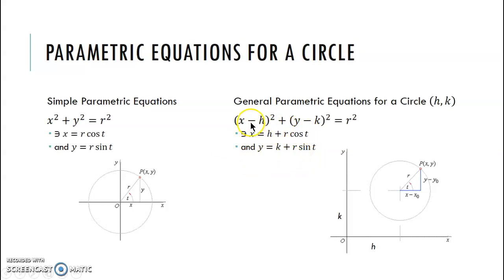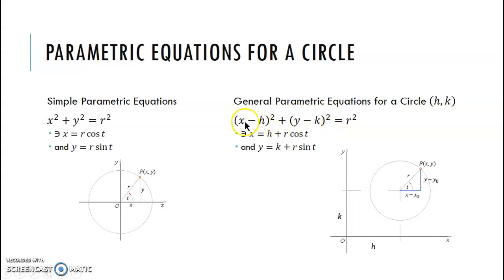Pay attention to the minuses in the equation: x minus h, y minus k. Whatever you see in the equation, it's going to lie to you — the signs will be opposite. So really pay attention to your signs for h and k when you see them in the rectangular equation.